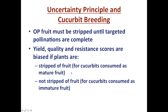For winter squash, which are consumed as mature fruit, if we are continually stripping fruit off the plant, the fewer fruit remaining at end of season will be biased because they were growing on the plant with a lower fruit load. For cucumbers or zucchini, which are consumed at an immature stage, leaving extra fruit on the plant will actually cause fruit set to diminish. In either case, leaving or removing those fruit will bias the phenotype we observe and how we evaluate whether a plant will advance in the breeding program.